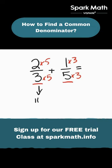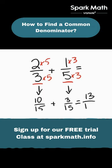2 thirds turns into 10 fifteenths, and 1 fifth turns into 3 fifteenths. Now we can add them, so we get 13 fifteenths.